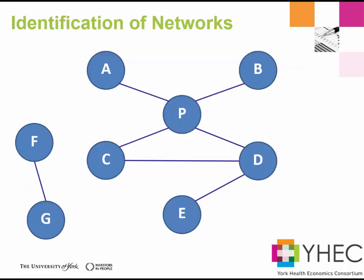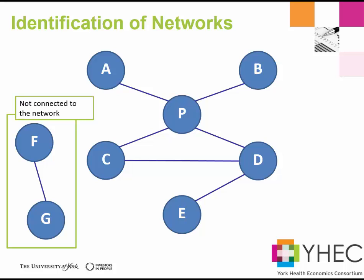The NMA is usually driven by one or more specific comparisons of interest, and often other interventions which are not of interest may be involved in the network to create links. The first step is to identify whether you have a connected network with the studies identified. In this example, you can see that the FG trial does not share a common comparator with any of the other trials in the network and so remains disconnected. At this stage, the FG trial would be excluded because it does not connect to the main network.